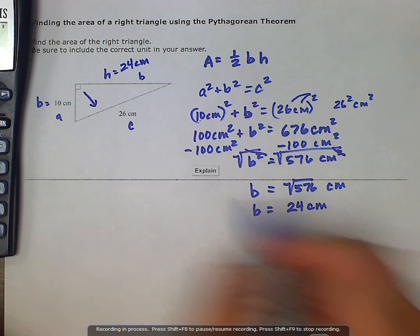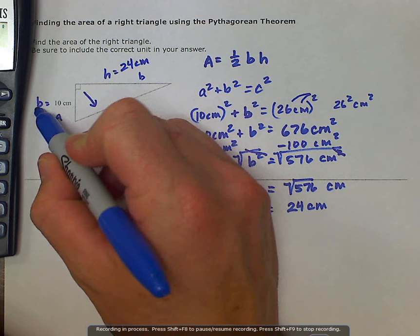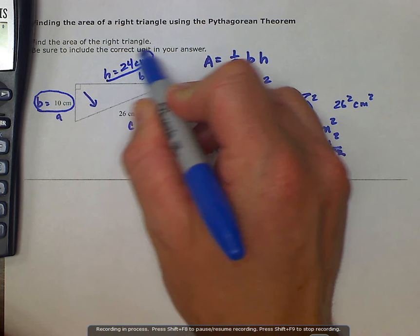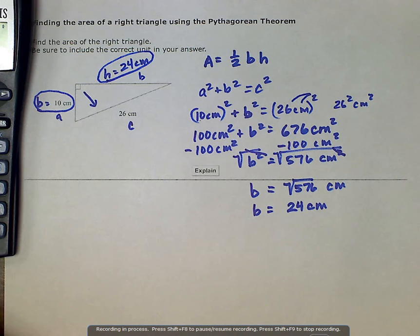So now we have our base, which is 10 centimeters, and our height, which is 24 centimeters. And we can plug this into our area formula.